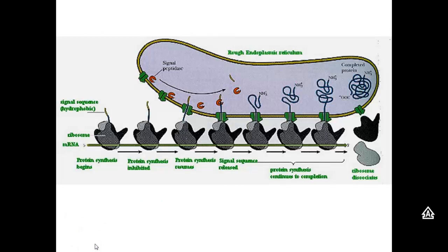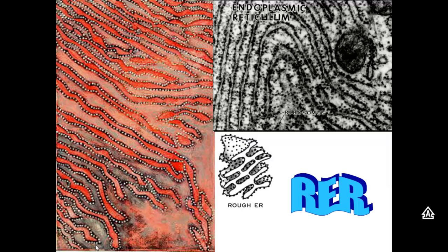Here we see a close-up of a ribosome that's attached to a rough ER. You'll see that this ribosome is making a protein, and as the protein gets longer and longer, eventually it will be inserted inside the rough ER. When the ribosome has completed the protein, it will release it. The rough ER will package it up in a vesicle and will send it to the Golgi body.